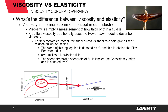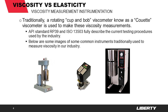The slope of this log-log line is denoted by N' and is labeled the flow behavior index. N' equals one implies a Newtonian fluid. The shear stress at a shear rate of one is labeled the consistency index and is denoted by K'. Traditionally, a rotating cup and bob viscometer, known as a Couette viscometer, is used to make these viscosity measurements. API standard RP39 and ISO 13503 fully describe the current testing procedures used by the industry.